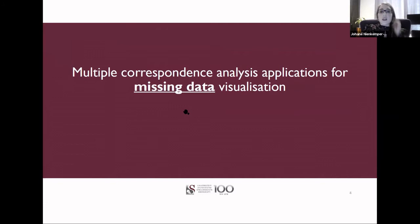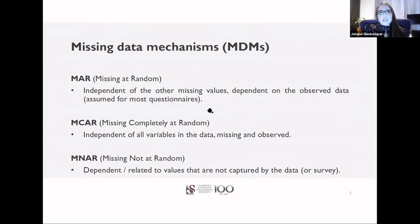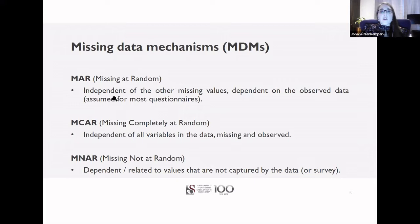I'm going to break down today's title into three core concepts. First, some background on missing data. Missing data occurs due to a random process referred to as the missing data mechanism, or MDM. There are three MDMs. The first, missing at random (MAR), is typically assumed for most datasets, especially questionnaires. This is when missing observations are independent of other missing observations but depend on the observed information, meaning we can use the observed information to try and impute the missing values.